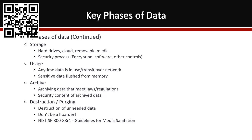Key phases of the data life cycle include classification, storage, usage, archiving, and destruction. Storage exists everywhere — hard drives, cloud, removable media. Ask yourself: is there encryption in place? Is there software protecting the data? Are there DLP controls preventing data from leaving the device? Different controls are needed around storage specifically.